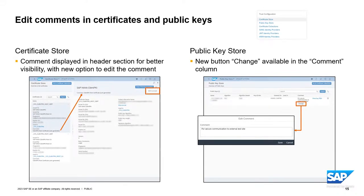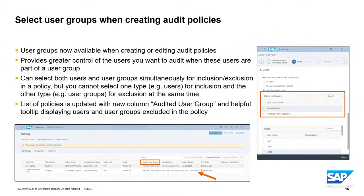Moving on to security new features: the certificate store and the public key store can now display comments that you define when creating or adding a certificate or public key. In those respective applications, you can see the comment and also edit the comment. This usability feature allows you to manage comments, which can be very important when you want to document why you made a change or added a new object in your deployment.